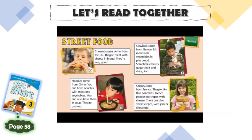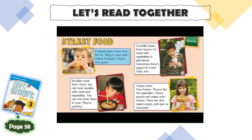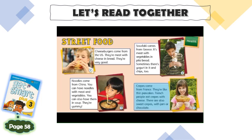Let's read together. Street food. Cheeseburgers come from the US. They're meat with cheese in bread. They're very good. Souvlaki comes from Greece. It's meat with vegetables in pita bread. Sometimes there's yoghurt in it, and chips too. Noodles come from China. You can have noodles with meat and vegetables. You can also have them in soup. They're yummy. Crepes come from France. They're like thin pancakes. French people eat crepes with cheese. There are also sweet crepes with jam or chocolate.